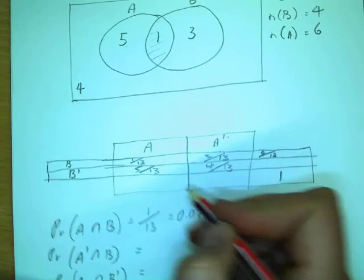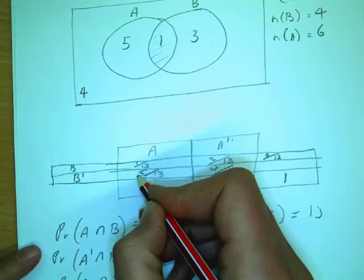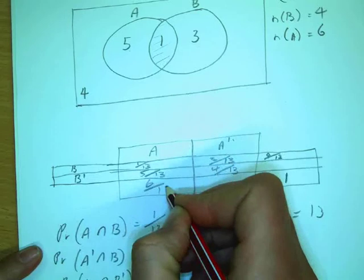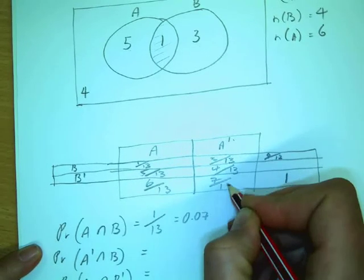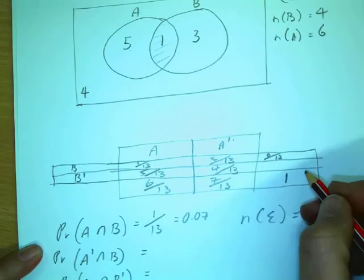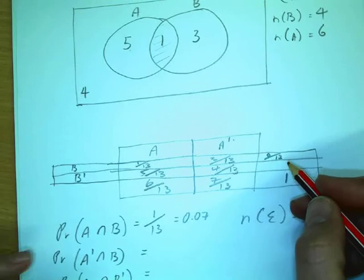Add these down, what do I get? No. 6 over 13? Add them across, what do I get? 13 over 13, so that's right?